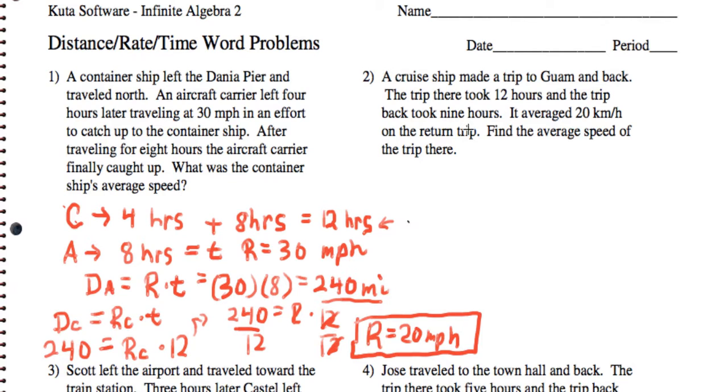And we'll take a look at problem number two right now. So a cruise ship makes a trip to Guam and back. It takes 12 hours, and the trip back took 9 hours. Average 20 kilometers per hour on the return trip. We want to find the average speed of the trip there.